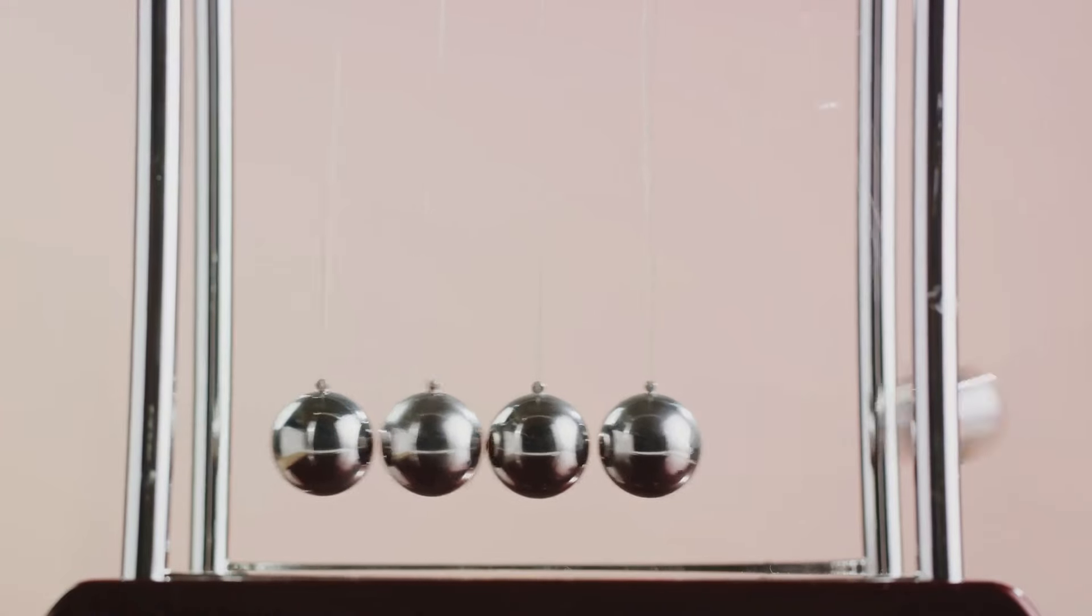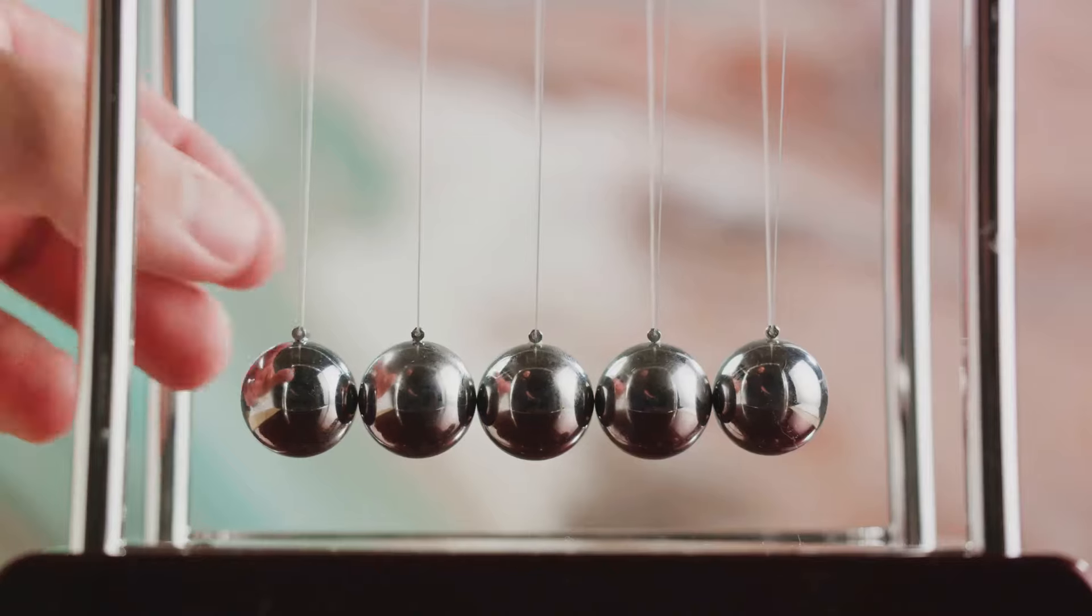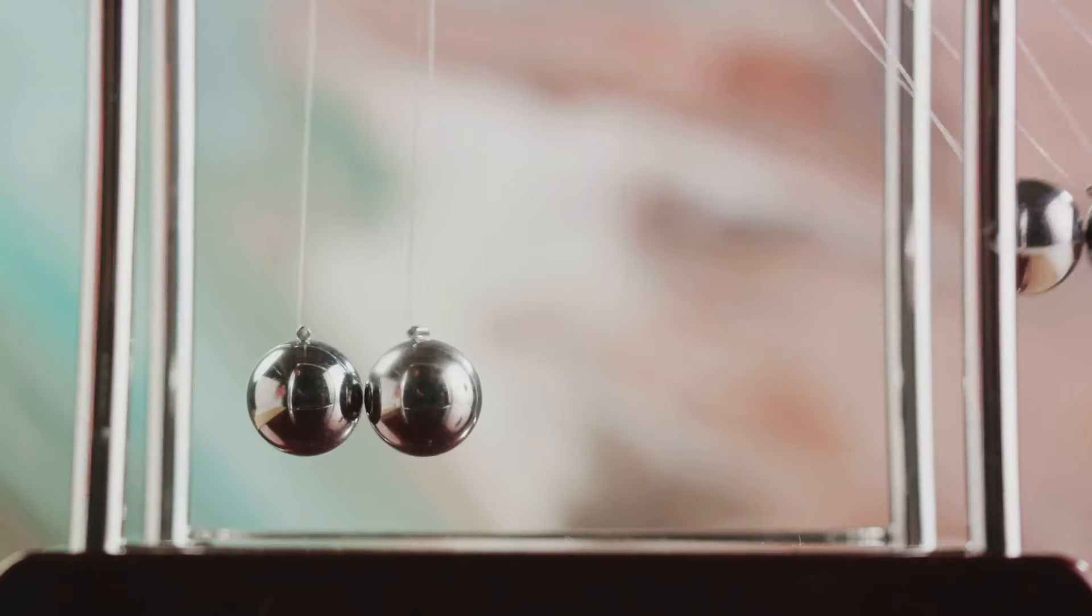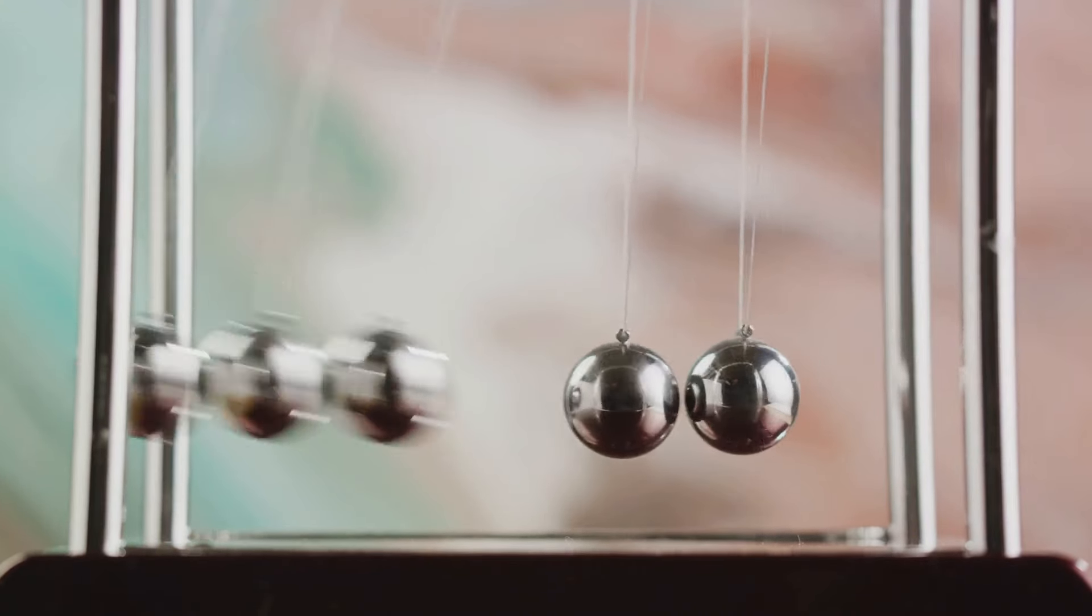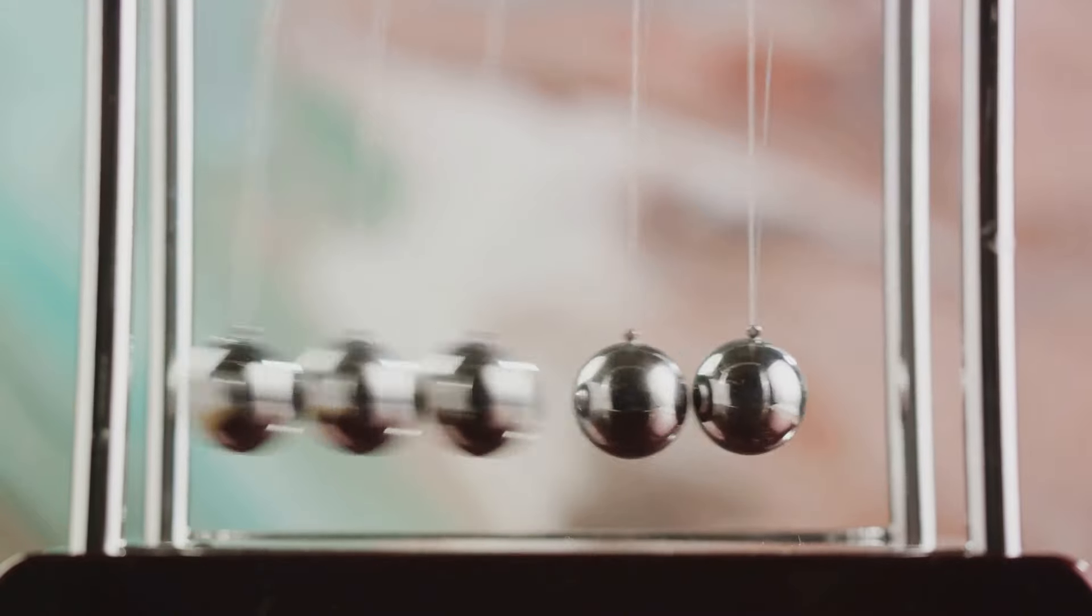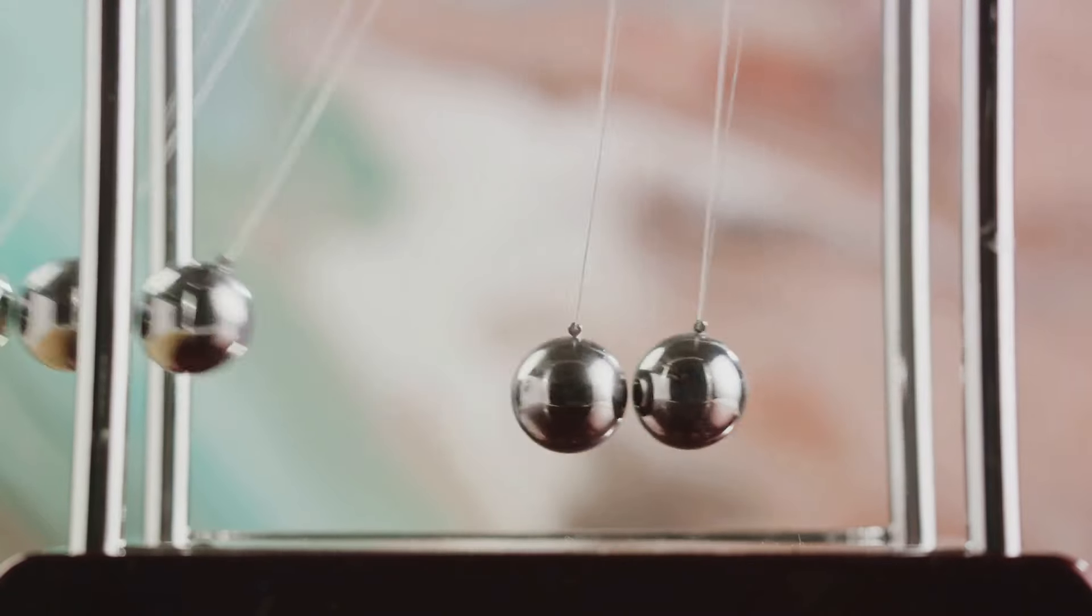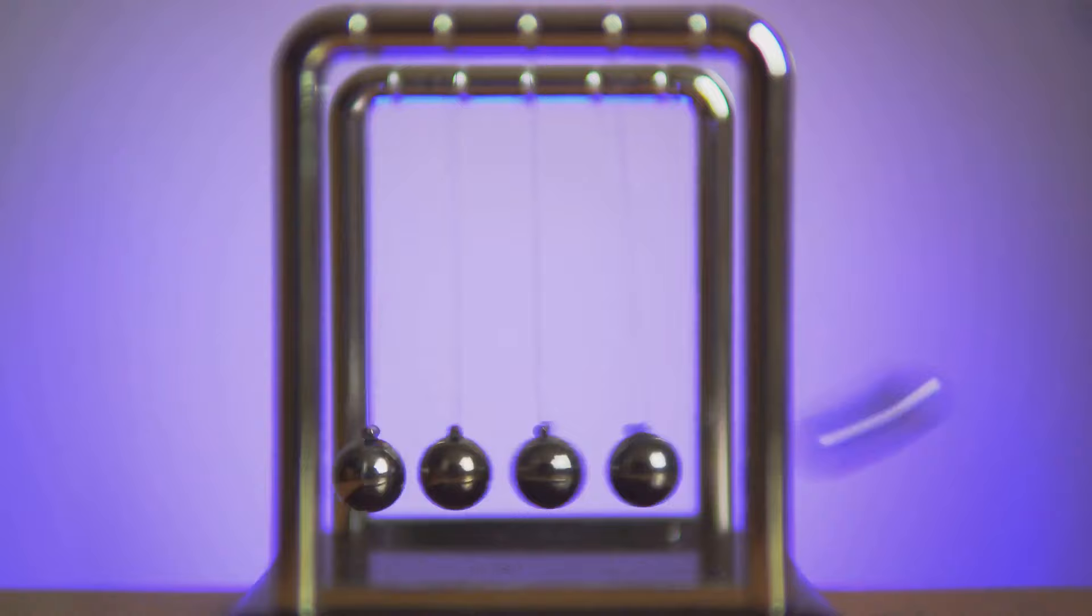In physics, symmetry is a fundamental aspect of nature. For instance, if you spin a perfect sphere, it looks the same from every angle. That's symmetry. But suppose you take a cube and spin it. Each face looks different. That's symmetry breaking.